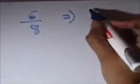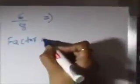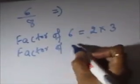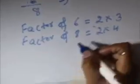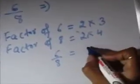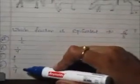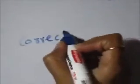To simplify 6/8, we factor both: 6 = 2 × 3 and 8 = 2 × 4. Writing 6/8 in terms of its factors: (2 × 3) / (2 × 4). The 2s cancel out, leaving 3/4. The correct answer is D: 3/4.